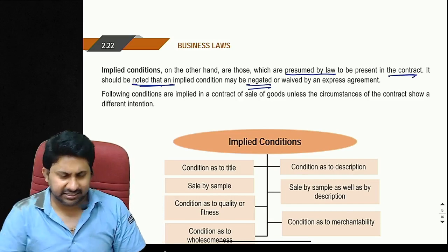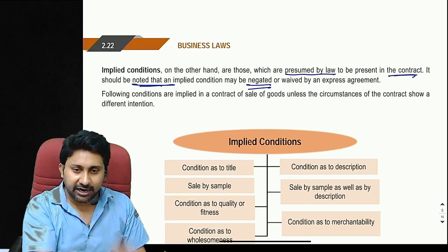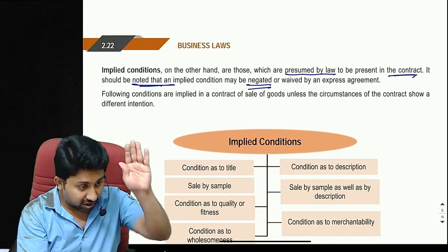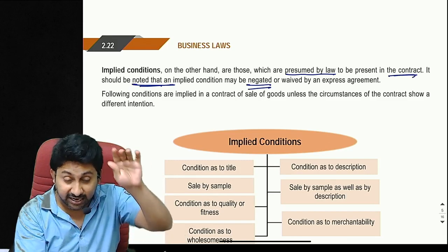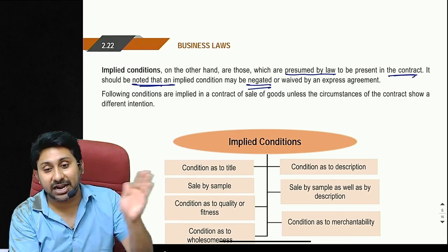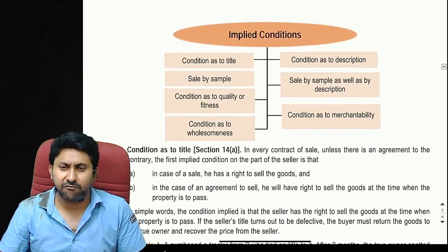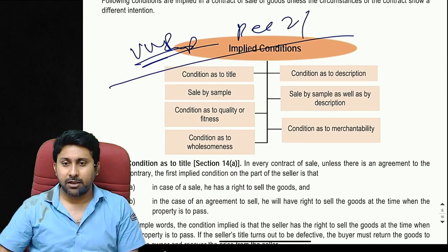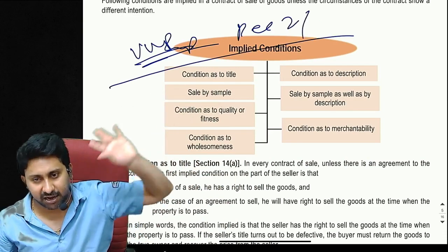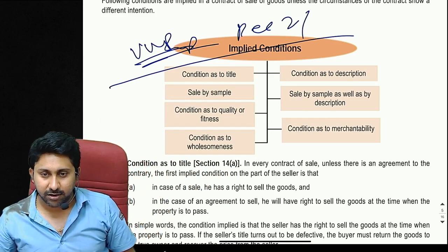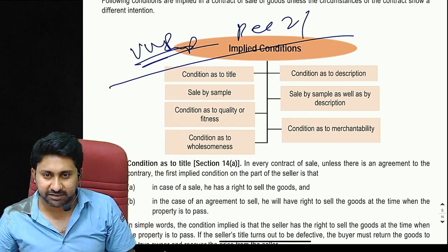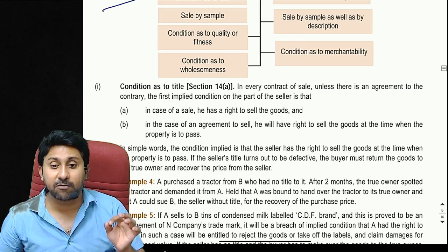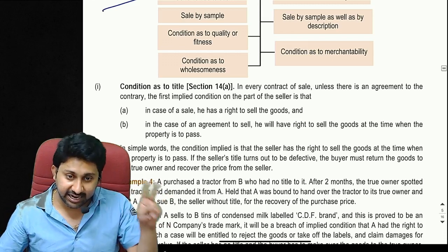Express conditions are things you clearly stated — grade one quality, white color, onions versus tomatoes. Now we move to implied conditions. Six implied conditions are very important for the coming examinations. Any one of these six points could appear as a case-law based question in the exam.